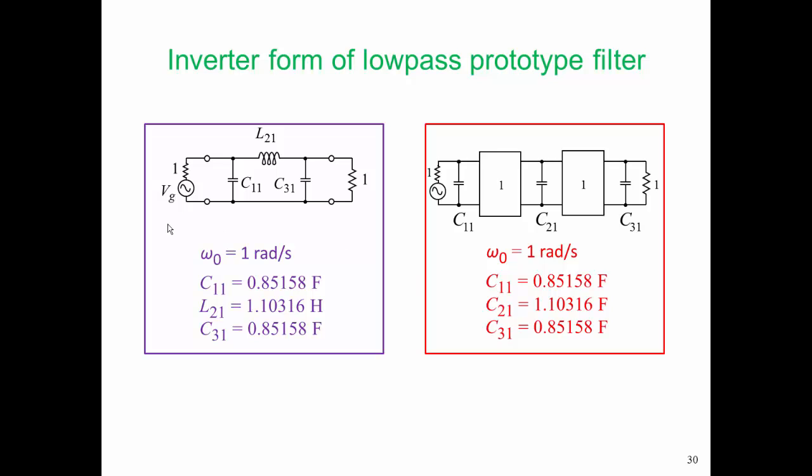We have taken our lumped element low-pass prototype filter. We've got rid of the series inductor so that there are only capacitors. And each of those capacitors becomes a shorted stub when we convert it to bandpass filter form, and we have inverters. So here's an interesting thing. Our inductance value, here's our inductor here in the original prototype, was 1.1 Henrys, and it becomes 1.1 farads in our transformed circuit.